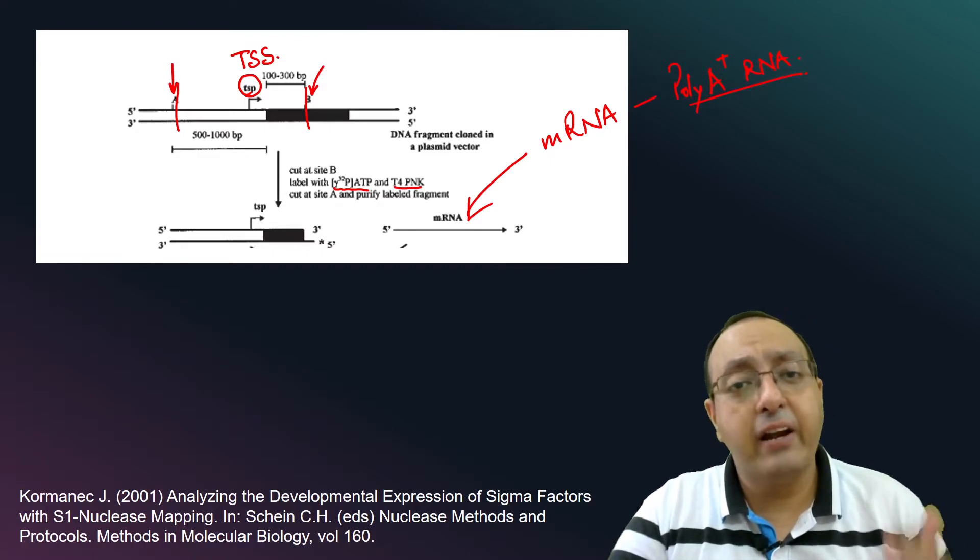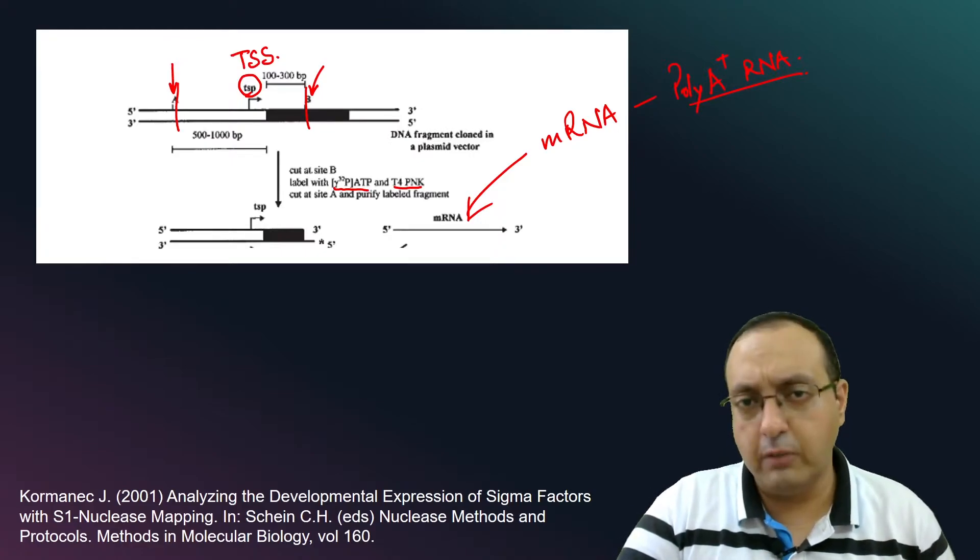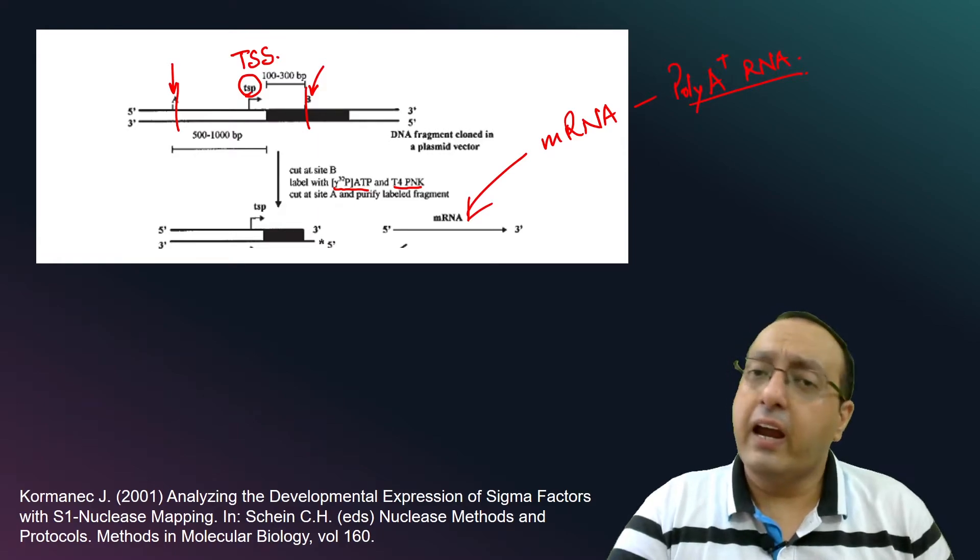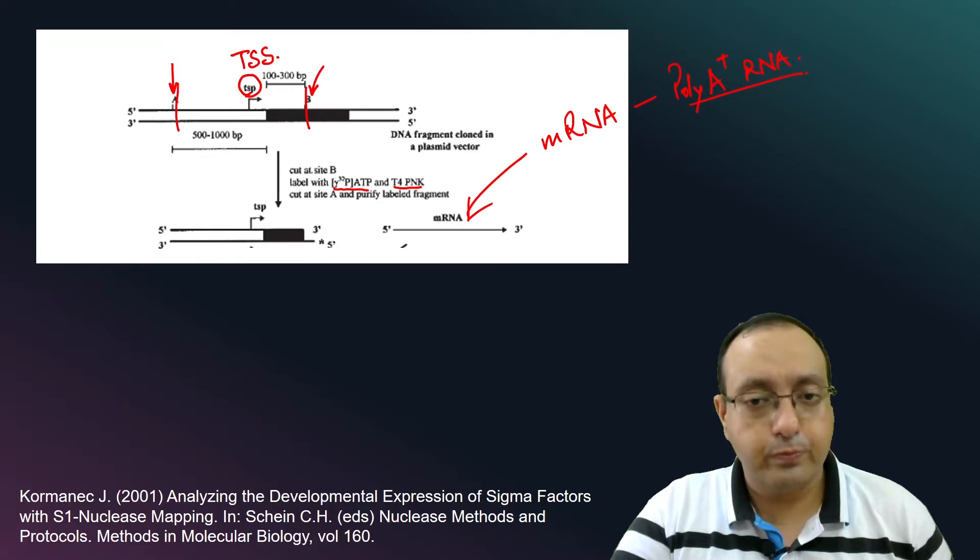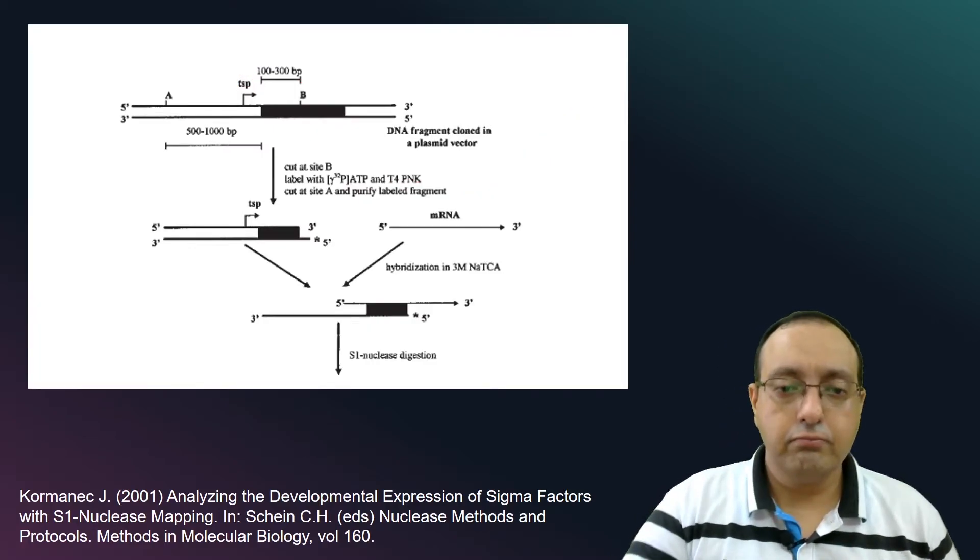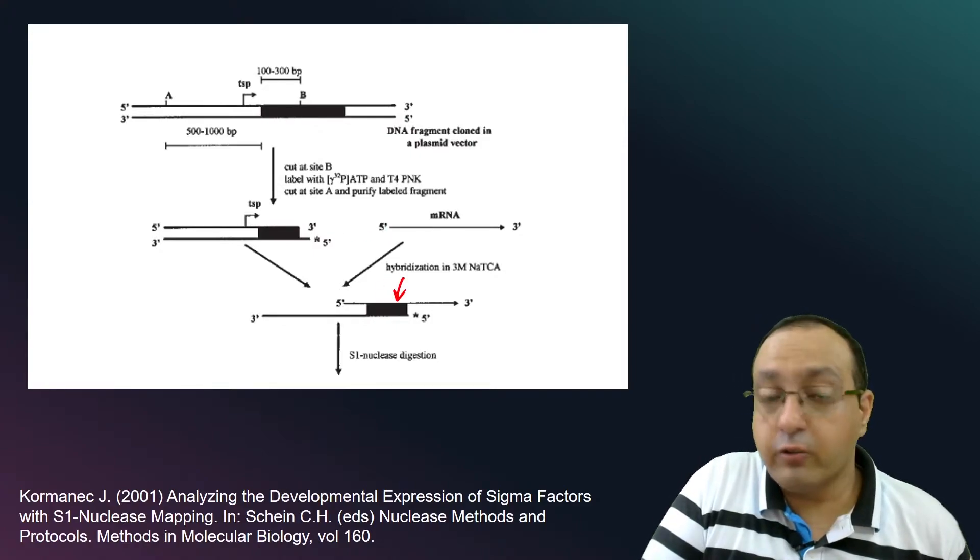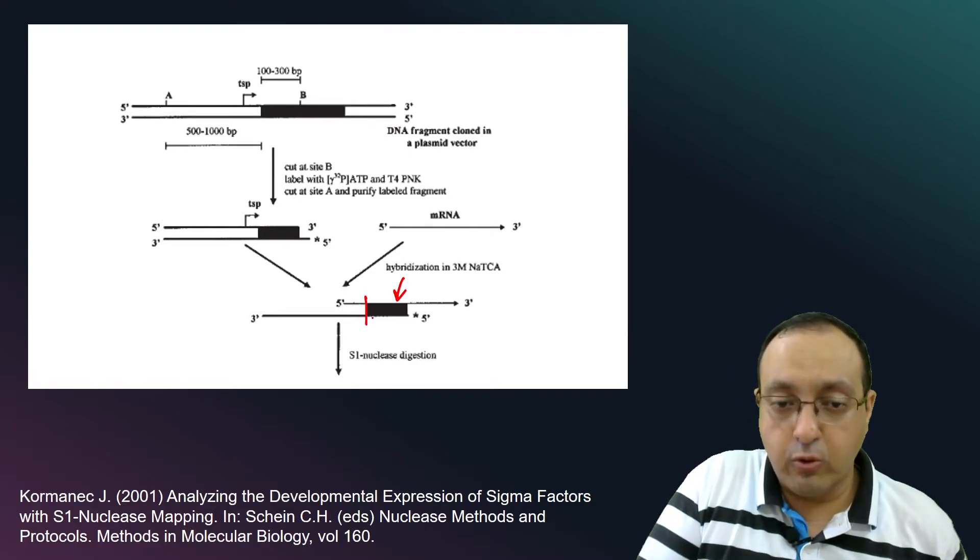Then what we do is we hybridize this DNA fragment which is radiolabeled. We purify it, usually by gel electrophoresis first if there is a need. And we hybridize it with the polyA plus RNA which contains our RNA of interest also. So what will happen? This labeled DNA will bind to the mRNA of interest. It will form a hybrid.